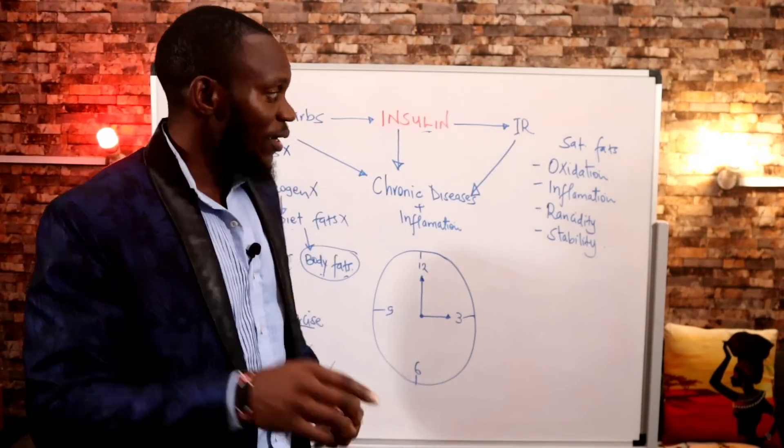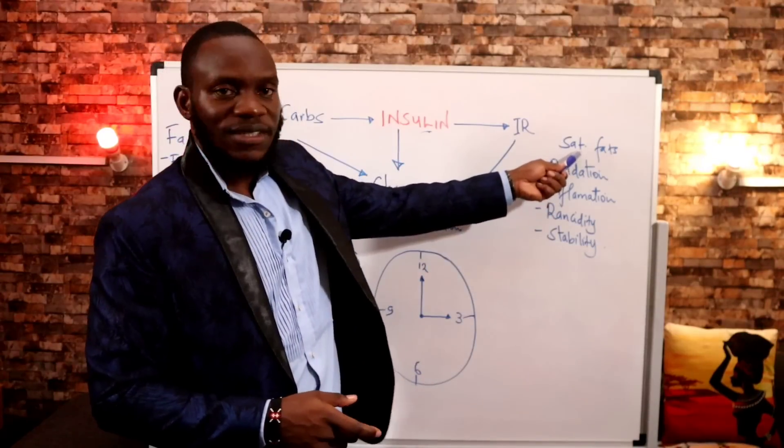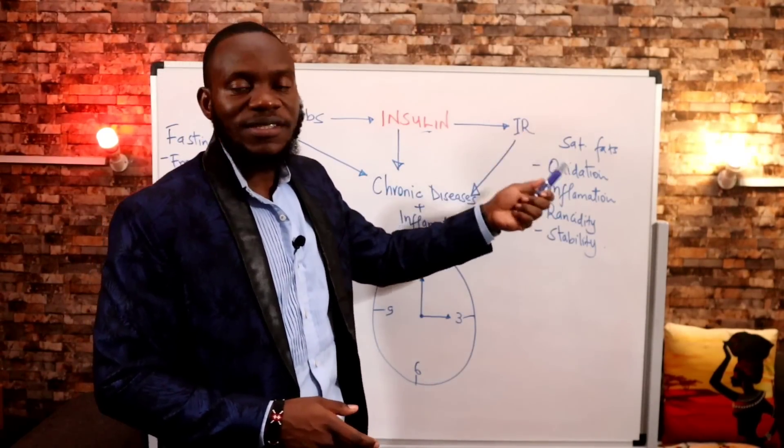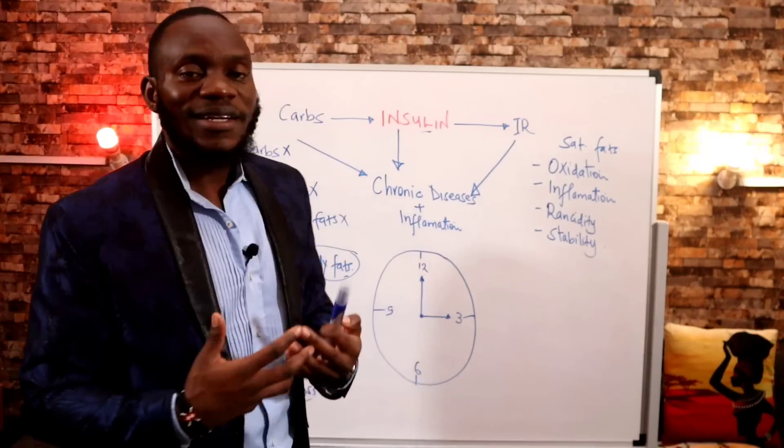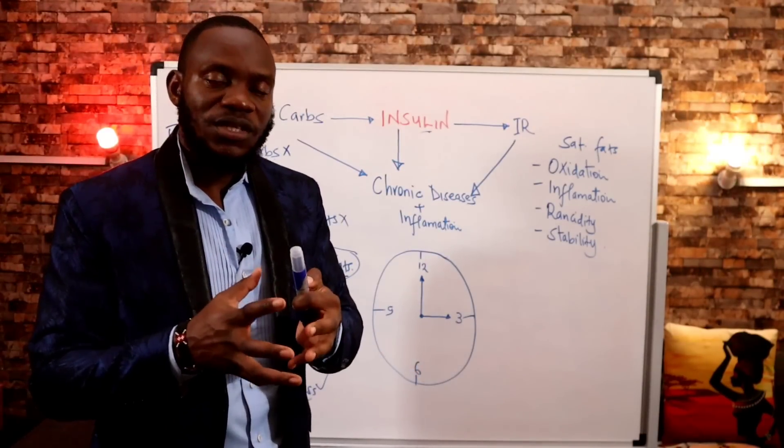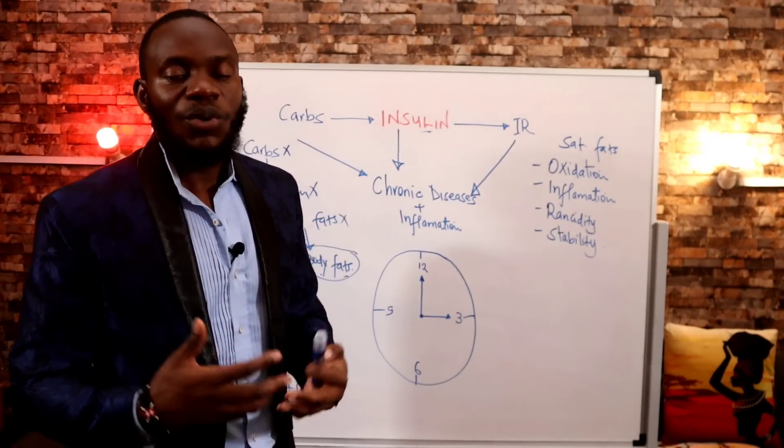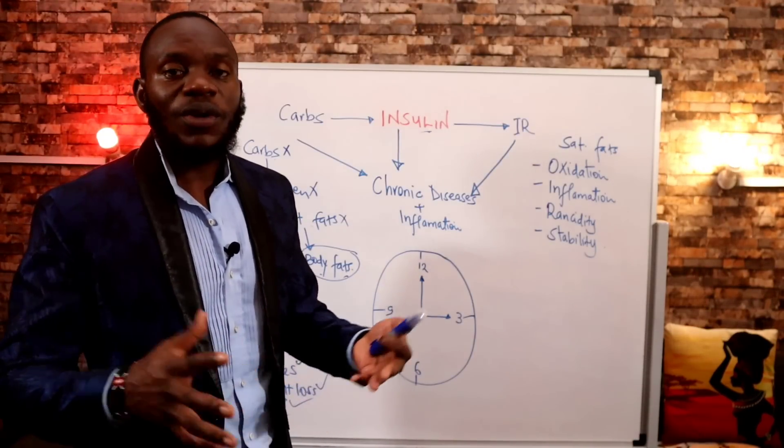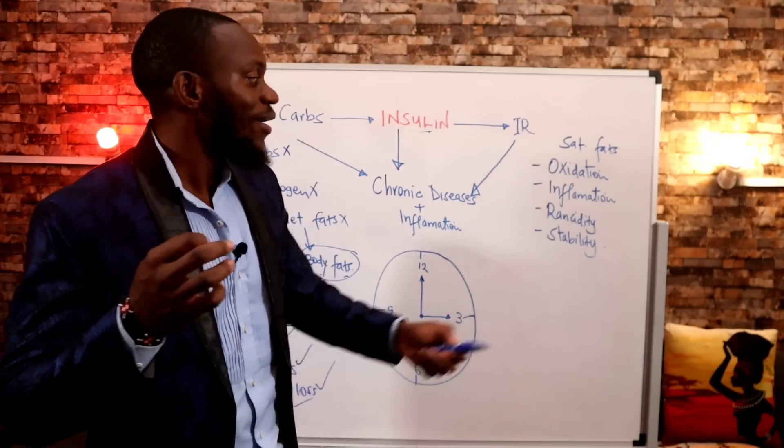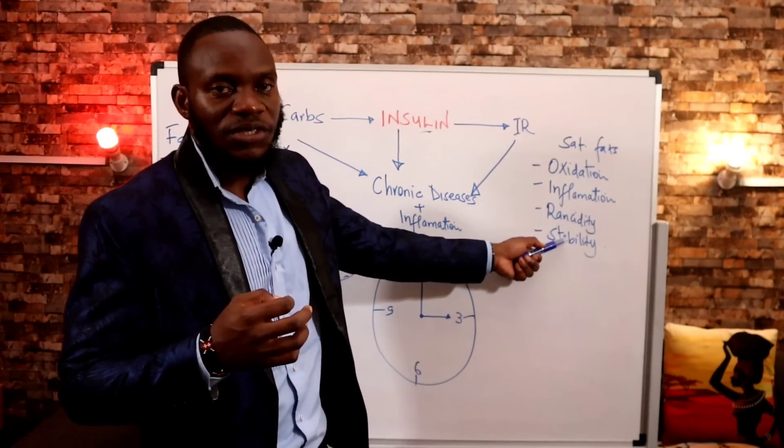Advantages of animal fat are: one, they are the healthiest fats we've ever known, giving us healthy fuel in the form of ketone bodies. Number two, they resist oxidation. Because they are saturated, they do not have the space or double bonds to cause oxidation under oxygen or high temperatures. So they are very stable under high temperatures.